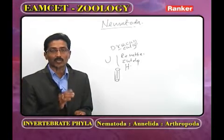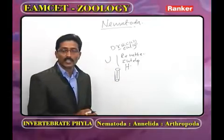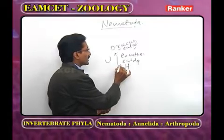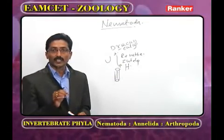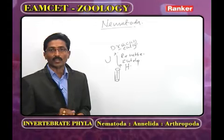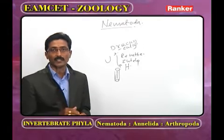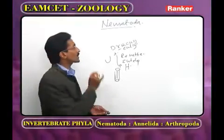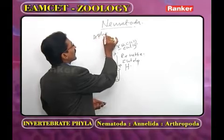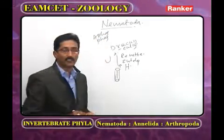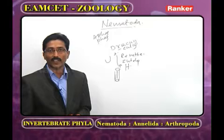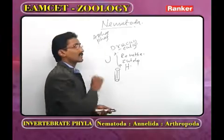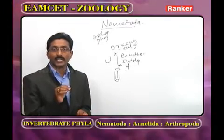At the anterior end of all nematodes, the sense organs are called amphids; at the posterior end, they are called phasmids. The presence or absence of phasmids is the unit for classification of phylum Nematoda. Nematoda is classified into two subclasses: Aphasmida and Phasmida. In Aphasmida, the amphids are of various shapes, phasmids are absent, the majority are free-living, and some are parasites. One example is Trichinella.